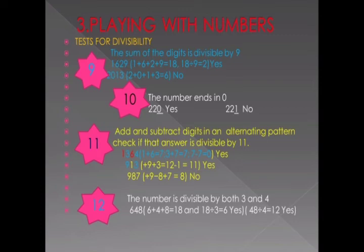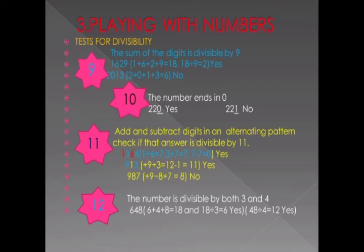For divisibility of 10: just check that the last digit is 0. If the last digit is 0, it is divisible by 10; if the last digit is any other number, it is not divisible by 10. For divisibility of 11: you have to add and subtract alternate digits. For example, add 1 and 6 to get 7, and add 3 and 4 to get 7. Then 7 minus 7 is 0, so the number is divisible by 11. If the result is 0 or 11 after alternating addition and subtraction, the whole number is divisible by 11.